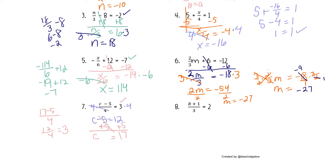Number 8 is the same idea — please try it on your own. We want to get rid of the divided by 3, so I'm going to multiply both sides by 3. Those cancel. We've got b plus 1 equals 6. Subtract 1 on each side, and b is 5. Let's check our work: 5 plus 1 over 3 — that is 6 over 3, which is 2, which is the truth.